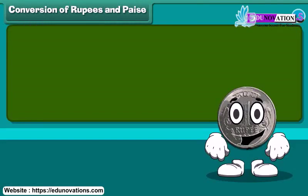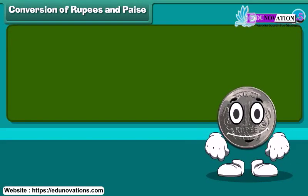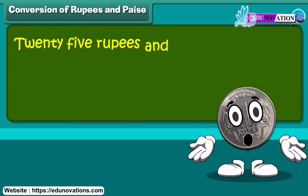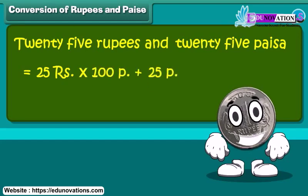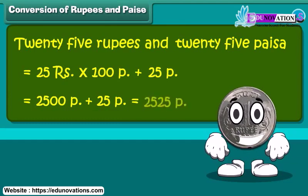We start with conversion of rupees to paisa and vice versa. 1 rupee is equal to 100 paisa. 20 rupees and 25 paisa is equal to 25 multiplied by 100 plus 25 paisa. This becomes 2500 plus 25 paisa, which we can say as 2525 paisa.